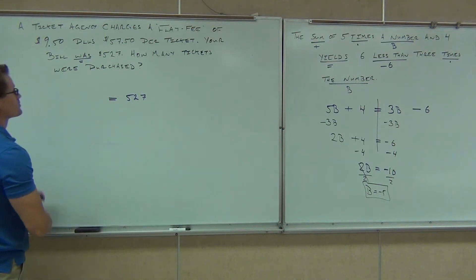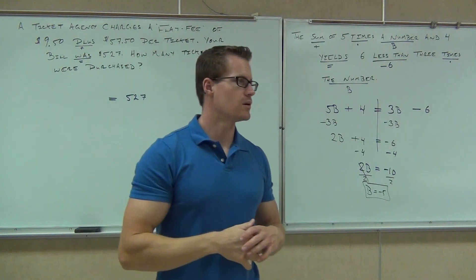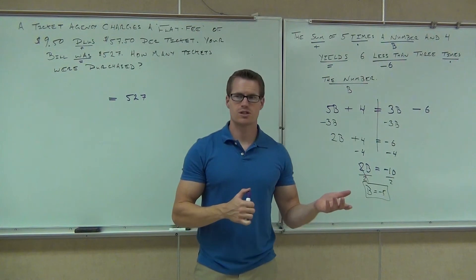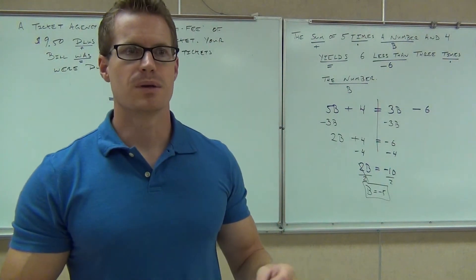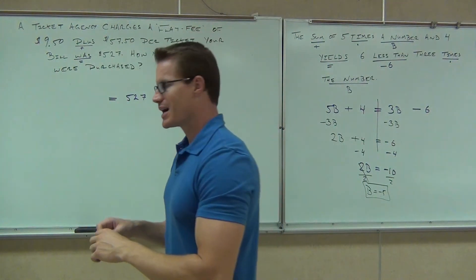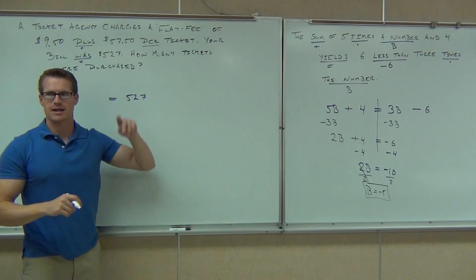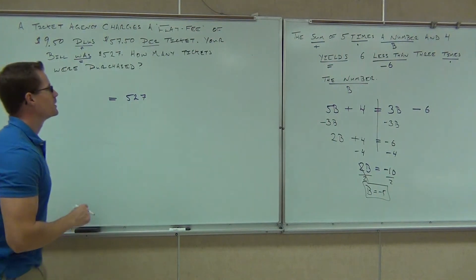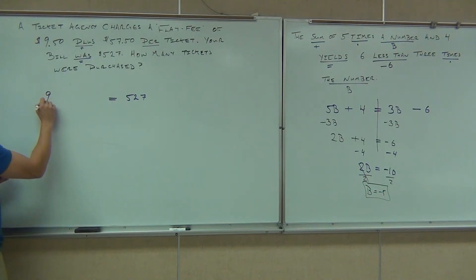On the left-hand side: 'ticket agency charges a flat fee of $9.50 plus $57.50 per ticket.' Tell me words that mean mathematics. Plus means plus — that's easy. But there's another important one: 'per.' Per ticket. That word 'per' means multiplication — per each. So however many tickets I have, I multiply that by $57.50 and that's my cost for those tickets. 'Flat fee' means it doesn't change — that's a constant. So I have $9.50 as my constant.